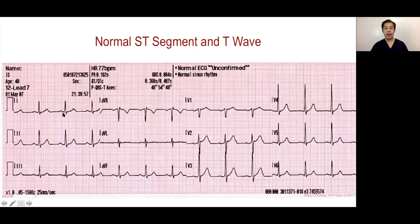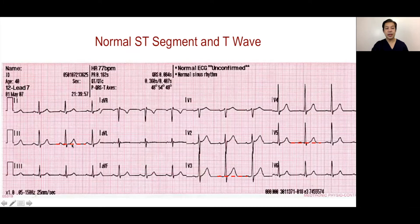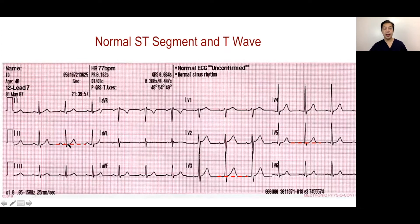The normal ST segment should be isoelectric in leads, and it is at the level of the TP segment. So the TP segment is isoelectric with the ST segment and the J-point. The J-point is the junction between the QRS and the ST segment — it marks the beginning of the ST segment and the end of the QRS.